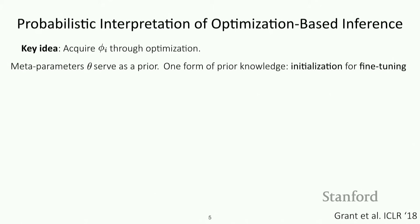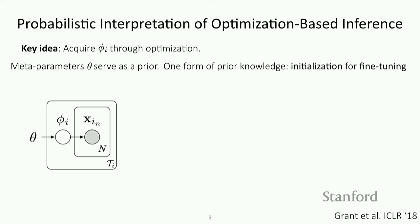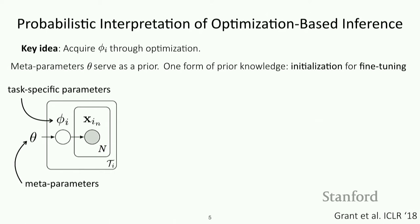Can we make this more formal? It turns out we can make a deeper connection than just saying it forms a loose prior as an initialization for fine-tuning. In particular, let's look at the following graphical model. Theta represents our meta-parameters, and phi_i denotes the task-specific parameters for each task. The shaded circle represents the data points we observe during the meta-training process.